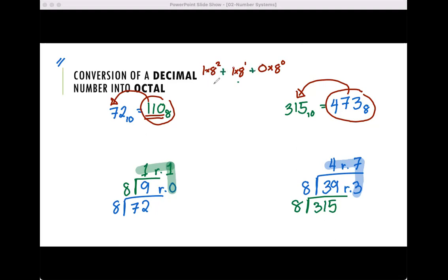So this is 1 times 8 squared which is 64, plus 1 times 8 which is 8, plus 0 times 8 to the 0 which is simply 0. Any number multiplied by 0 is 0. So that is a total of 64 plus 8 plus 0, which equals 72. So we return back to this value.